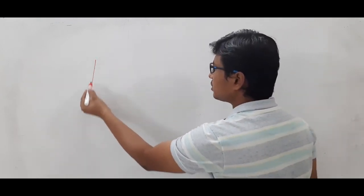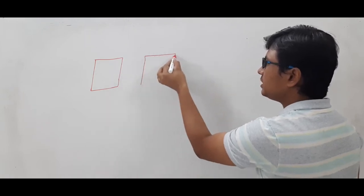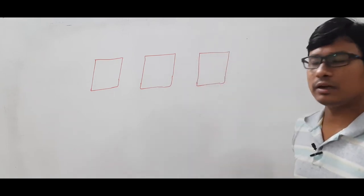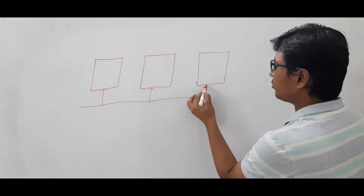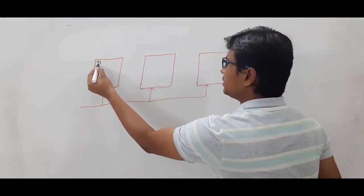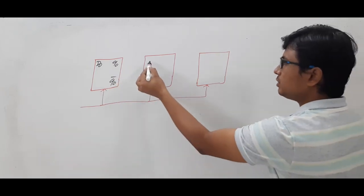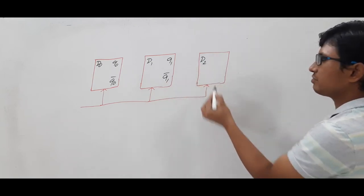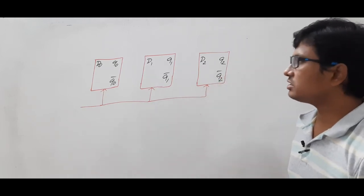In a synchronous counter, let's say you want to design a 3-bit counter — then 3 flip-flops are required. In a synchronous counter, a common clock is used for all the flip-flops. Using D flip-flops, we have D0 with output Q0 and its complement, D1 with output Q1 and its complement, and D2 with output Q2 and its complement.